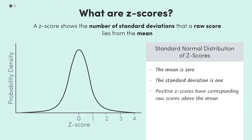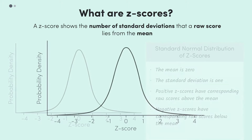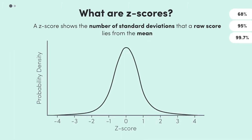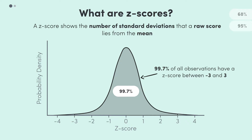Any value with a positive Z-score is above the mean, and any value with a negative Z-score is below the mean. Because Z-scores measure distance from the mean in terms of standard deviations, we can easily apply the empirical rule. Saying that a value has a Z-score of 1 is the same as saying that the value is one standard deviation above the mean. So 68% of all observations will have a Z-score between negative 1 and 1, 95% between negative 2 and 2, and 99.7% between negative 3 and 3.